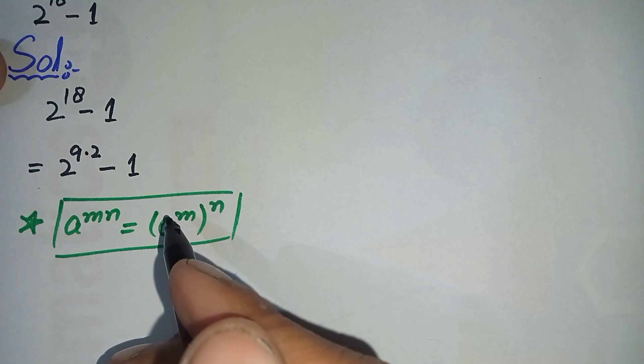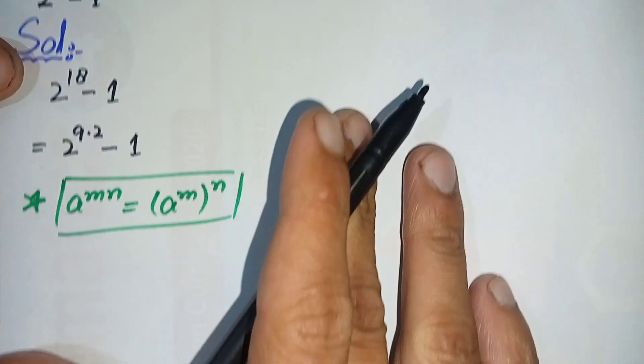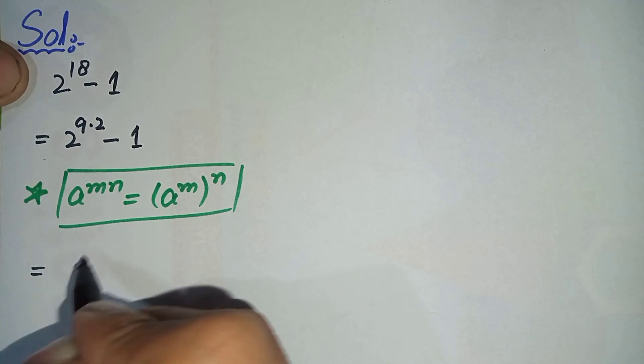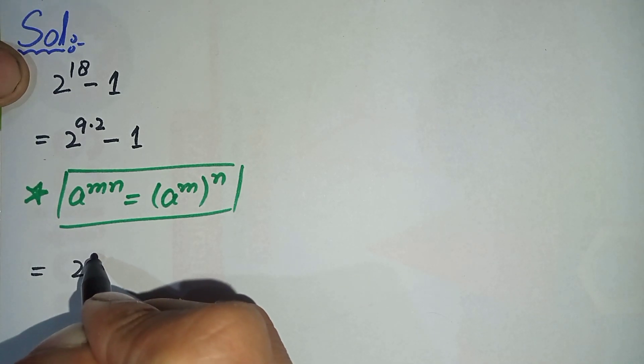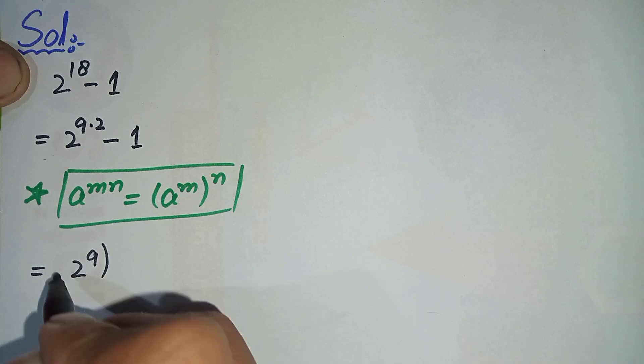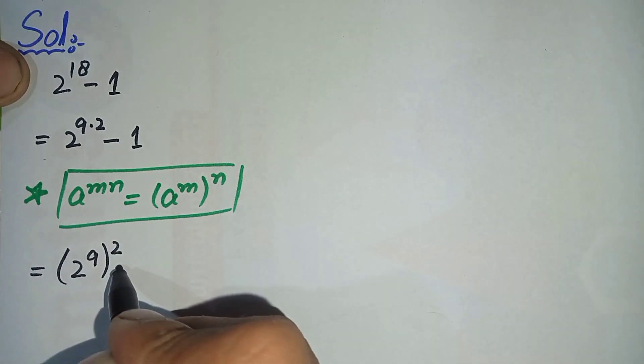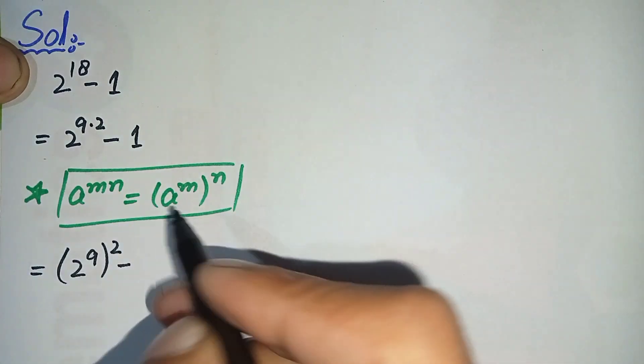So by using this exponential property in this equation we can write it as equal to 2 raised to power 9 raised to power 2 minus 1. And we can also write this 1 as 1 squared.